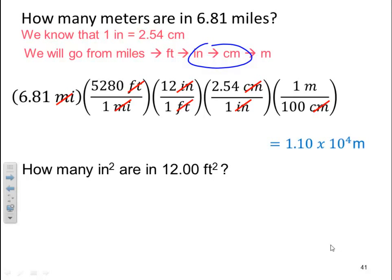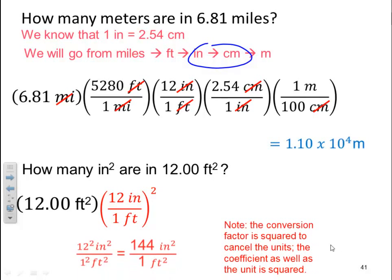Say for instance, how many inches squared are in 12.00 feet squared? Well, we start off with our unit again, 12.00 feet squared. And we're going to now multiply that by our 12 inches to one foot. Once again, I'm putting feet in the denominator again to cancel. However, I got to get the whole term to square. So I will be squaring the whole term. Now you got to realize when you square the whole term, the conversion factor is squared to cancel the units. The coefficient as well as the unit is squared.